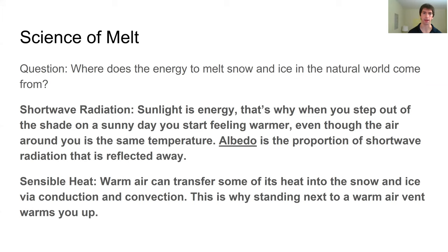Something with an albedo very close to one — you can think of this like a mirror — is reflecting almost all of the light, almost all of the energy away from itself. Whereas something with an albedo much closer to zero is going to absorb a lot of that energy. Things with really low albedos, like asphalt — you notice how the roads get hot — have low albedo and so they're absorbing much more energy than say the grass or sidewalks nearby. One of the relevant things to think about with snow and ice melt is that in general snow and ice have a very, very high albedo, especially relative to water, which is what they turn into when they melt.